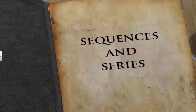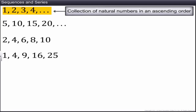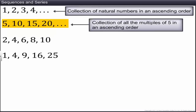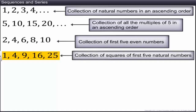In this module, you will learn about sequences and series. Take a look at the collection of numbers shown on the screen. In the first collection, all the natural numbers are listed in ascending order. In the second collection, all the multiples of 5 are listed in ascending order. The third is a collection of the first 5 even numbers, and the last is the collection of squares of the first 5 natural numbers.